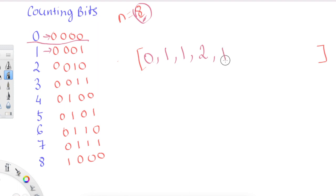For four we have one one, then for five we have two ones, and then for six we have two ones again. For seven we have three ones, and for eight we have one one. I hope you understand the question and what we need to return.